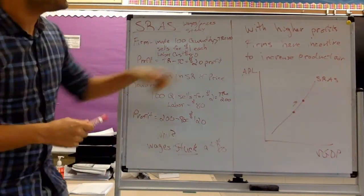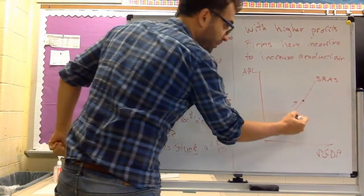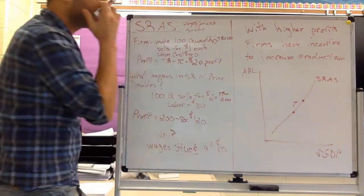Now what happens when there's profits to be made? With higher profits, firms have an incentive to increase production. So firms, higher money being made so they'll possibly increase production.